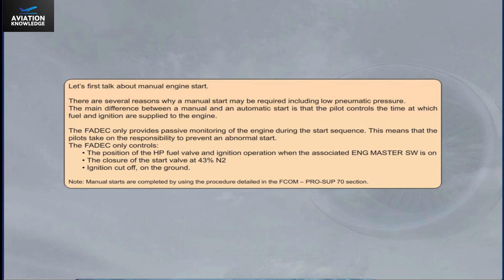During a manual start, the FADEC manages the closure of the start valve at 43% N2, and ignition cut-off on the ground. Manual starts are completed by using the procedure detailed in the FCOM Pro Sub 70 section.